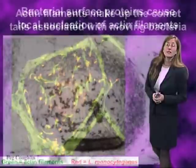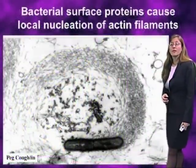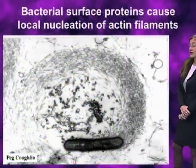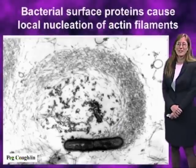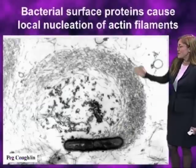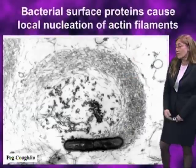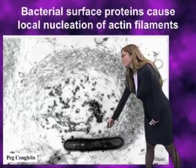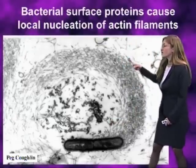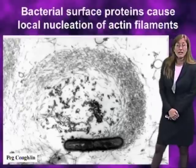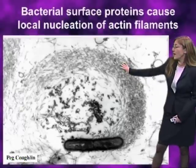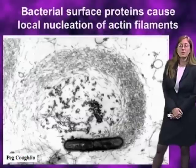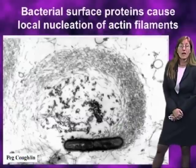Zooming in at the level of electron microscopy, we can see the organization of the actin filaments associated with the bacteria in structures named comet tails by the electron microscopist Lou Tilney. Here in a thin section through an infected cell, you see a bacterium and its long streak of comet tail, which is made up of many thousands of actin filaments. You can just barely make out all of the individual actin filaments that are cross-linked together to form the comet tail.